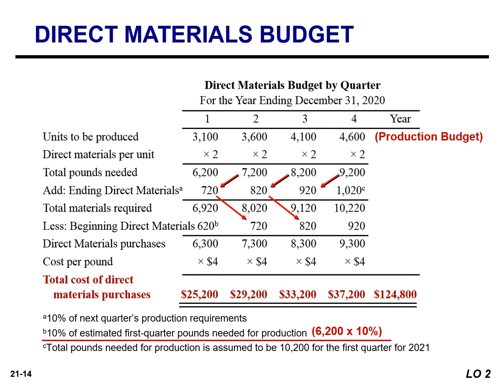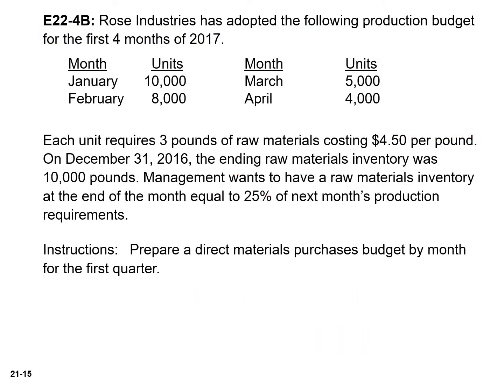For Q4, the units of direct materials required for production is 9,200 pounds. Adding desired ending direct material units of 1,020 (which was given) and subtracting the beginning direct material units — the previous quarter's balance — gives 9,300 pounds to be purchased. At $4 per pound, that's $37,200, the total cost of direct material purchases. In this exercise, you will prepare a direct materials purchases budget by month for the first quarter. The solutions will be provided in a subsequent slide.